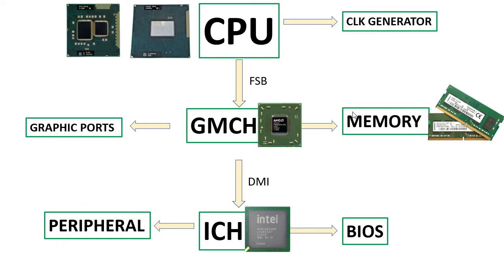The GMCH is connected to the memory slots. The memory can be DDR1, DDR2, DDR3, DDR4, etc. It is also connected on the other side to graphic parts, such as VGA and HDMI. In some motherboards, the graphic card is separated from the North Bridge.